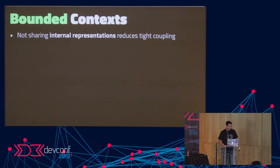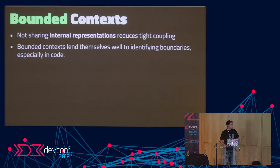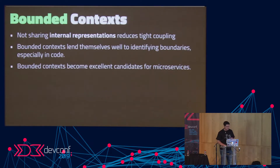The reason behind bounded contexts is they allow us to model our domains in a way that we don't share internal representations of our models — that's quite an important key. Bounded contexts lend themselves very well to identifying the boundaries between your code. If you define your context, the boundary is very clear. You could have an order service and a product service, and these bounded contexts become excellent candidates for microservices.